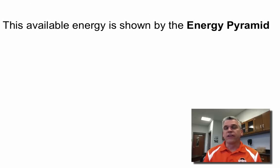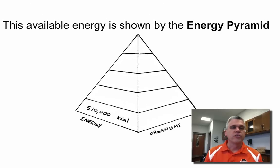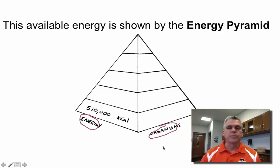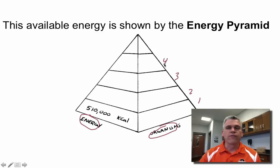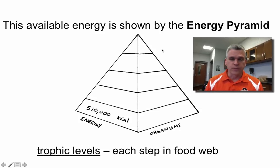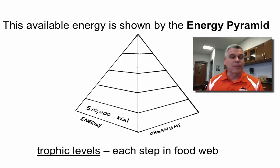We can see this energy in another way by looking at what's called an energy pyramid. Here's an example of an energy pyramid. We have energy on one side of the pyramid and organisms on the other side. There are five different layers, or trophic levels, to this energy pyramid. One way we can think of this is that each one of these is a different step in the food web.